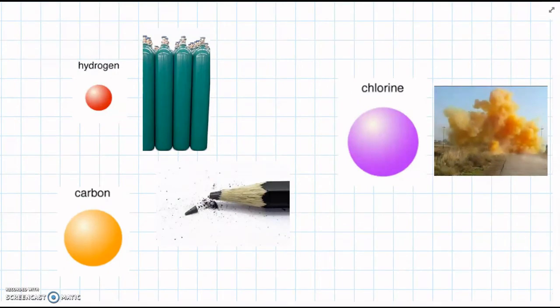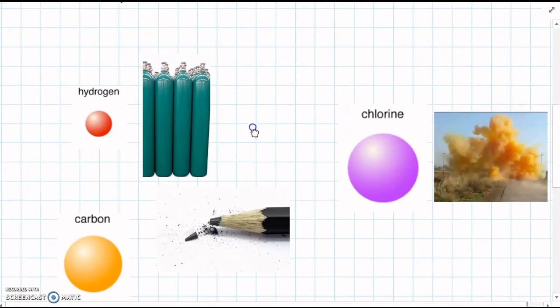We've got hydrogen, which is a gas, and we have to keep it in cylinders if we want to store it. Otherwise it will just fly away into the atmosphere.